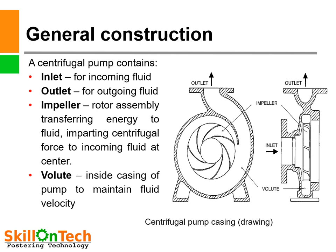Let us see the general construction of a centrifugal pump casing. Two diagrams of the centrifugal pump casing are shown in the slide. You can see the inlet of the pump — water enters into the suction at the center of the impeller. The outlet is for outgoing fluid, meaning discharge. The impeller is this rotating assembly; it has curved vanes and transfers energy to the fluid, imparting centrifugal force to the incoming fluid at the center.